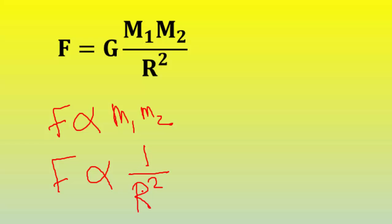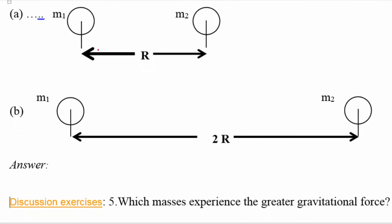What does that mean? Let's look at some examples. As you see in the notes, if you have two objects — one has mass m1 and the other has mass m2 — and the distance between their centers is r. Then you have the same two objects but we double the distance between them.